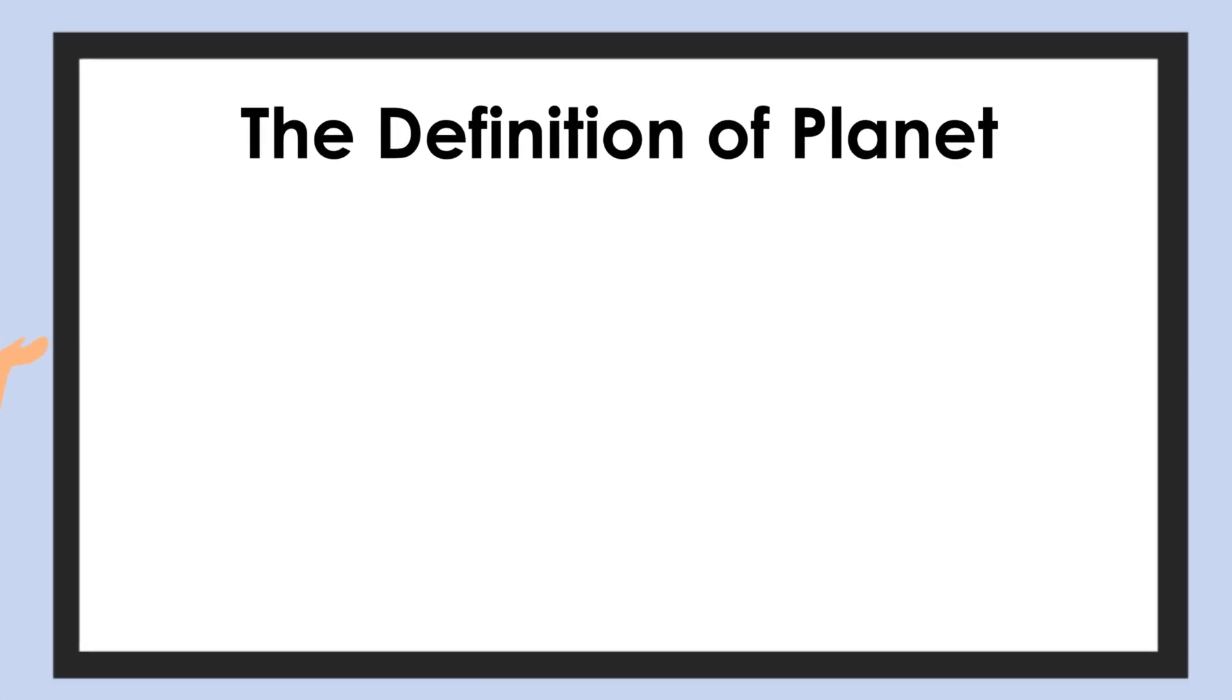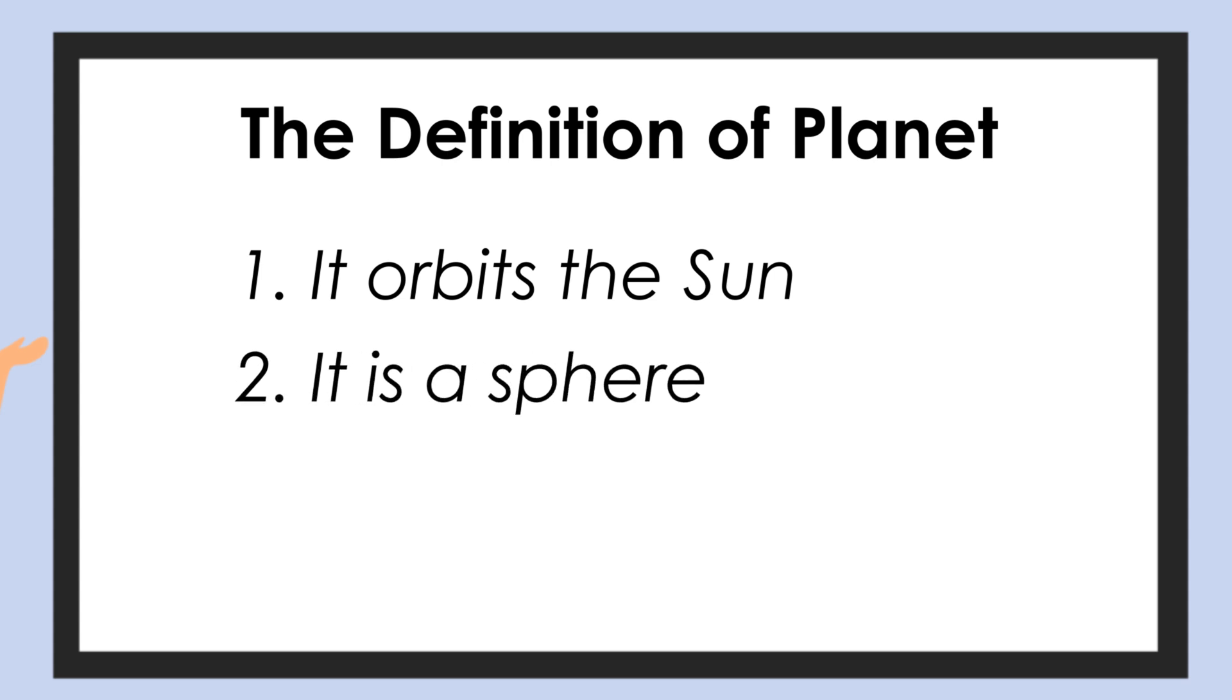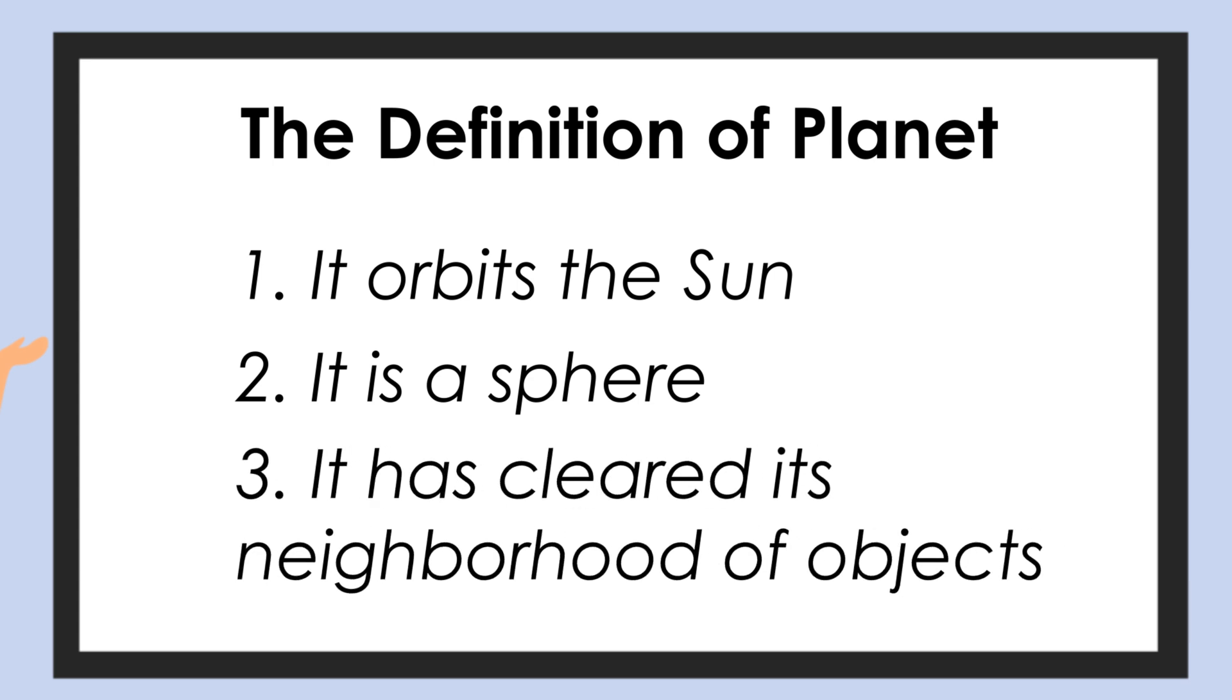In order for an object to be classified as a planet, it now has to fulfill three requirements. One, it orbits around the sun. Two, it has enough mass to maintain a spherical shape. And three, it has cleared the neighborhood around its orbit of other objects.